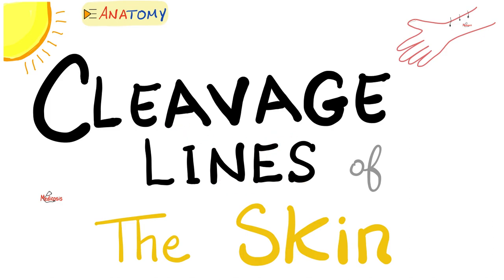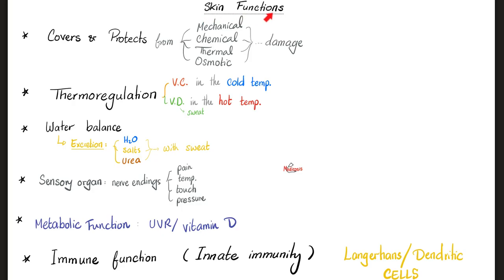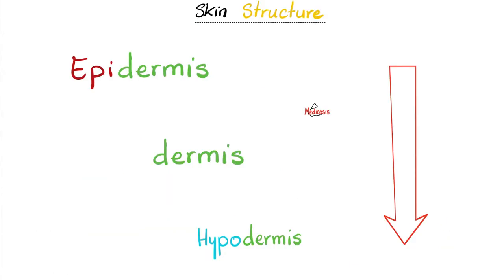Cleavage lines are caused by one layer of the dermis. I have an anatomy playlist here on my channel. The functions of the skin were discussed before: in brief, it covers and protects, thermoregulation, water balance, it's a sensory organ, metabolic function especially vitamin D, and an immune function especially dendritic cells.